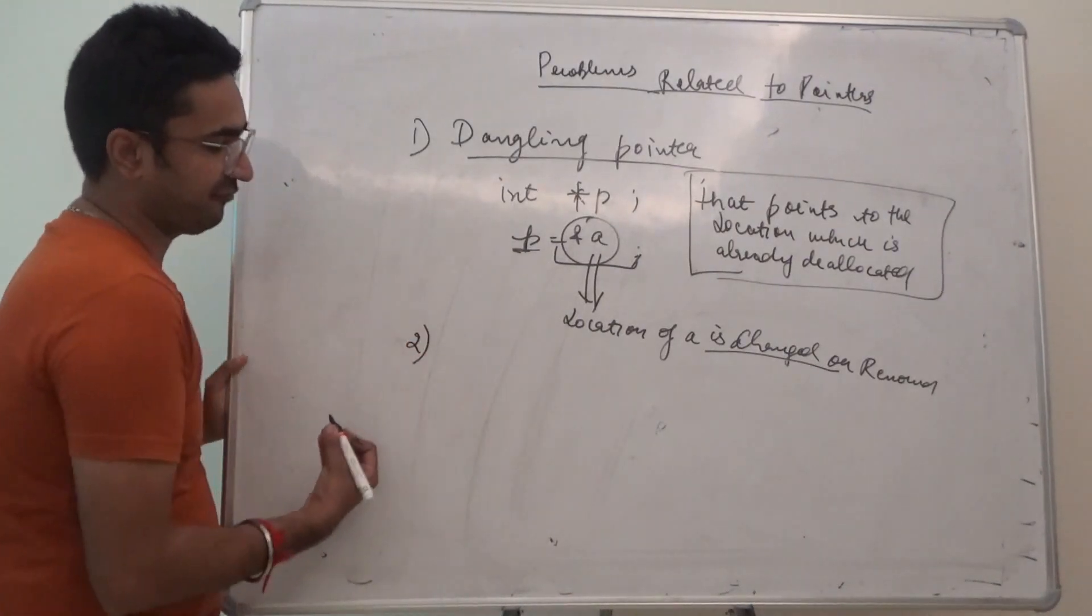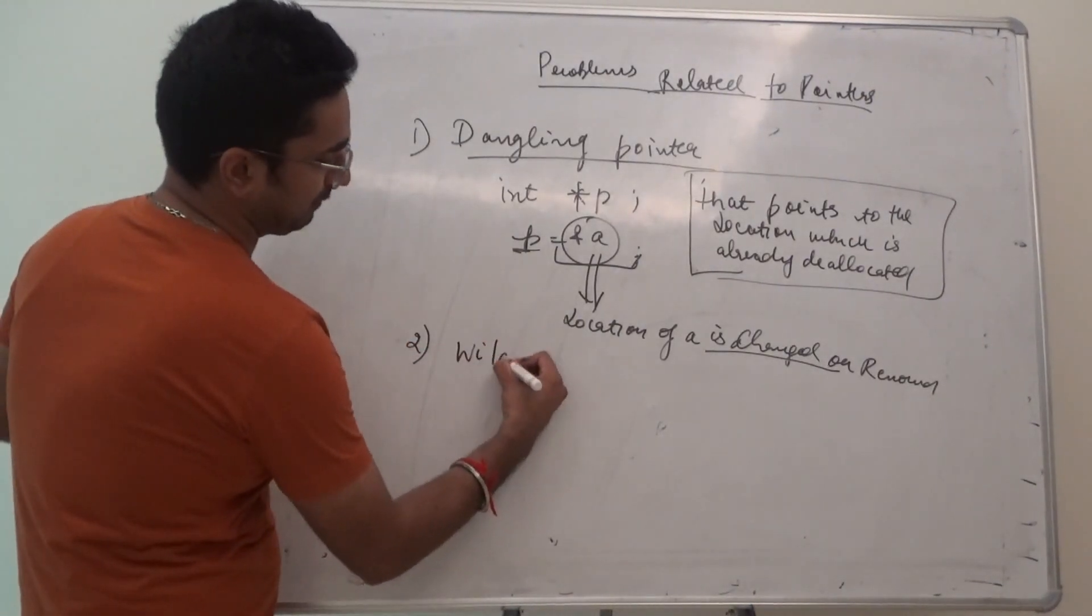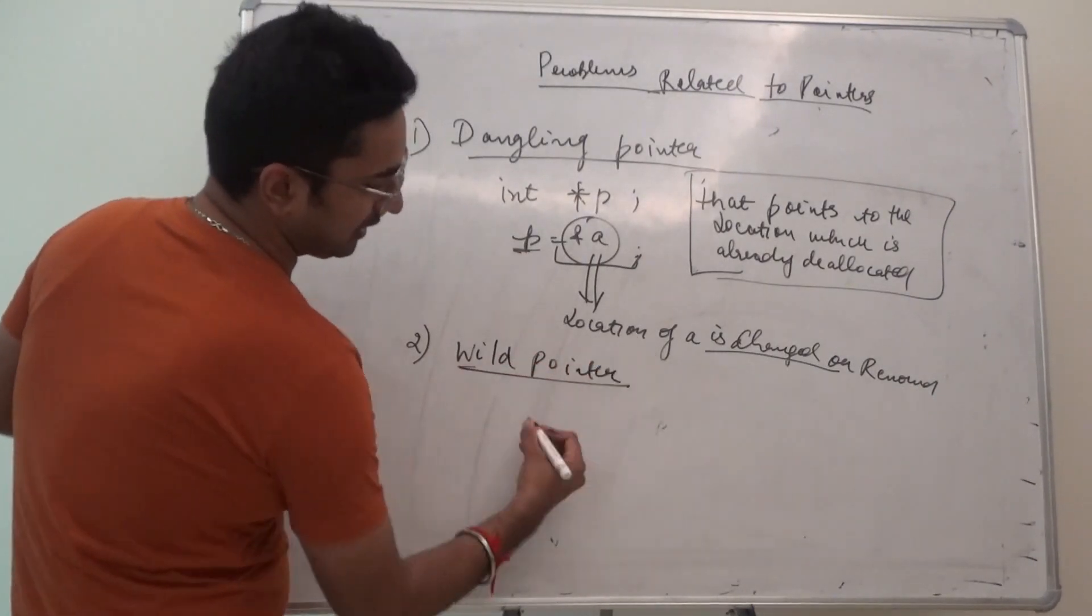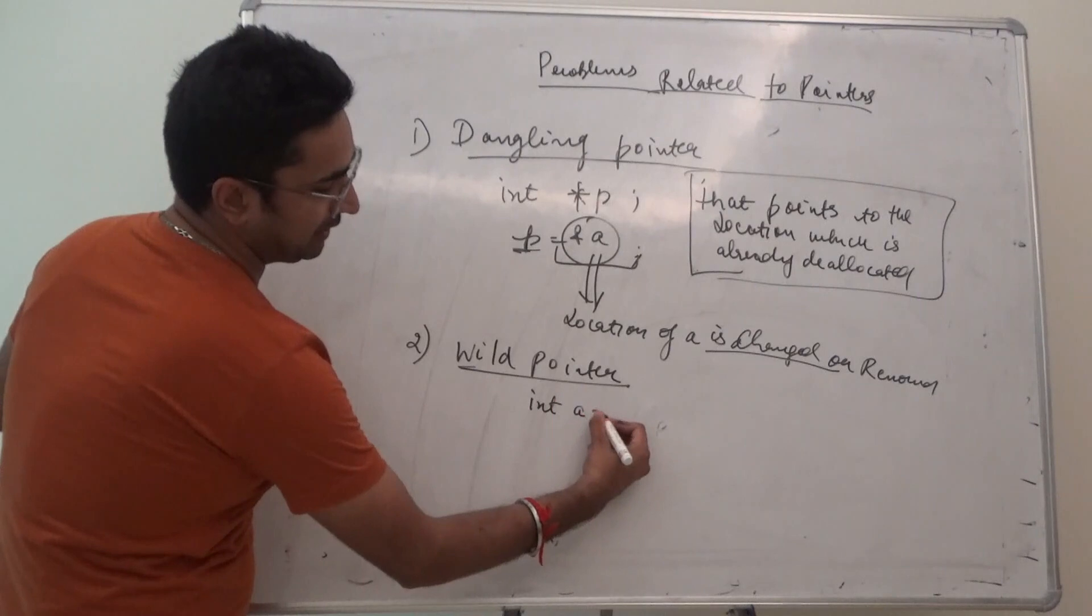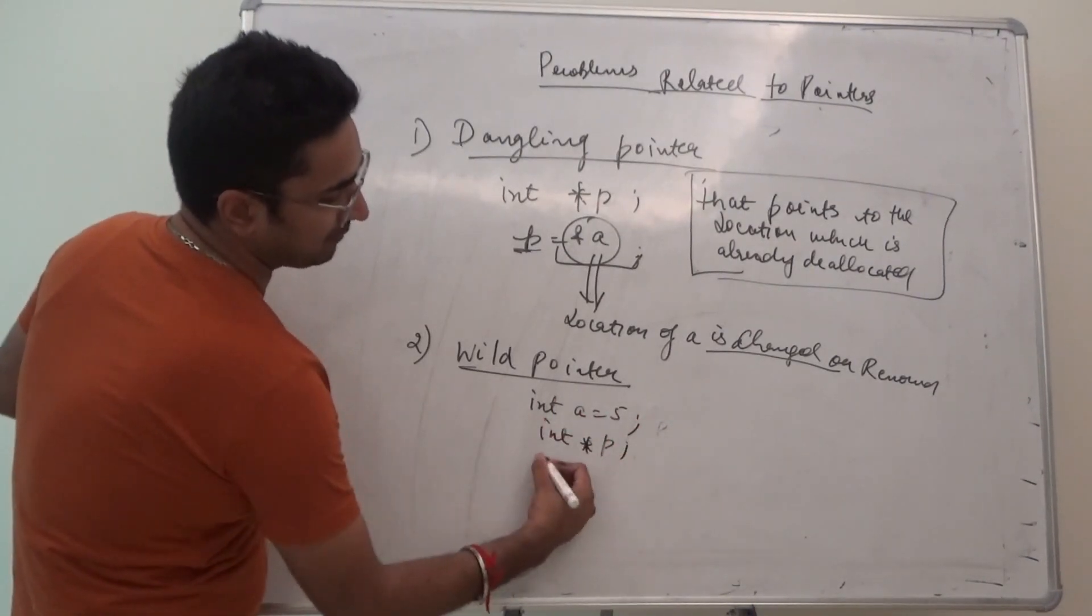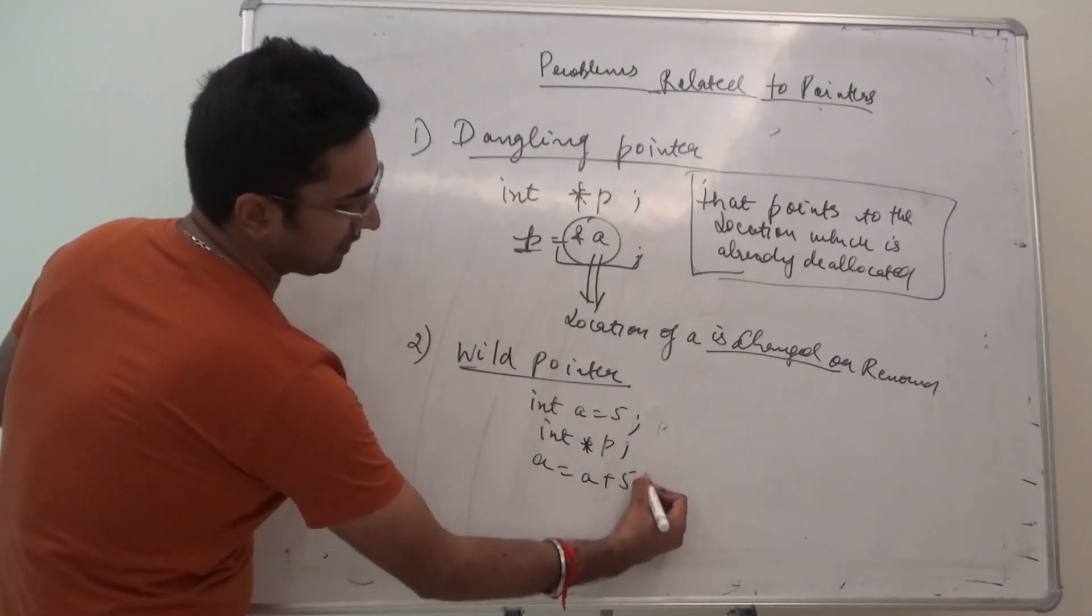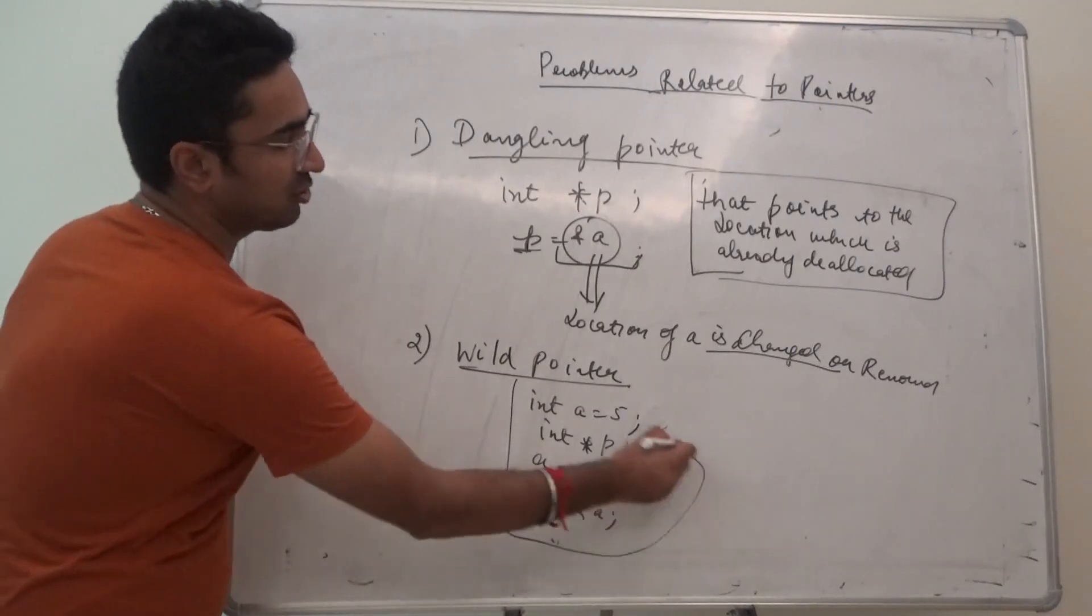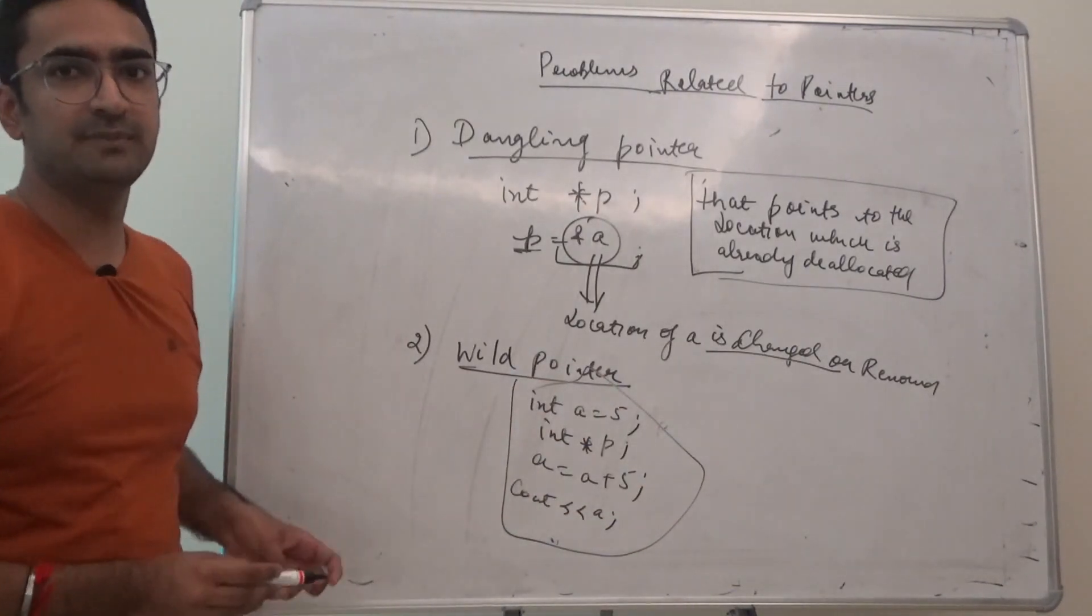Then we have the concept of a wild pointer. What is a wild pointer? Let's take an example. I'm writing int a equals 5, int star P. I'm just writing a equals a plus 5 and cout a. I have written this particular code.